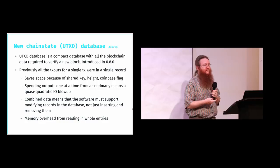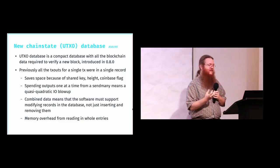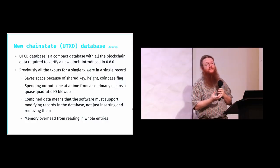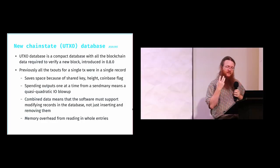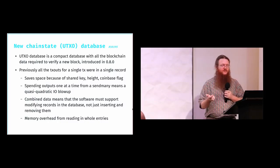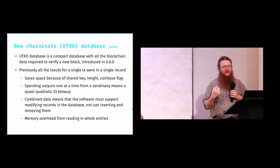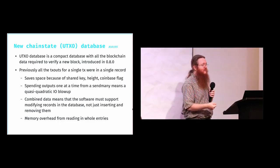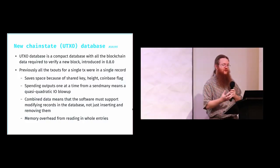The backend system previously matched all of the outputs for a single transaction into a single record in the database. Back at the time of 0.8.0, that was a much faster way of doing it. The batching together saved space because it shared information like the height of a transaction, whether it's a coinbase transaction, and the transaction ID across all outputs. But the problem is that when you spend outputs from a transaction one at a time, you have to read in all of the outputs and write them back, creating a quasi-quadratic I/O blowup where a lot more work is required for transactions with many outputs.